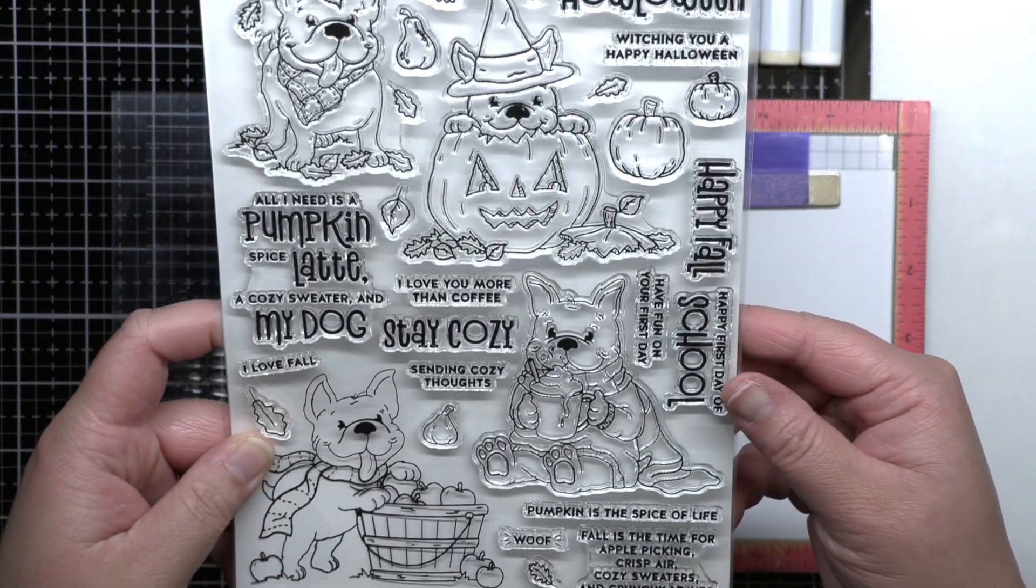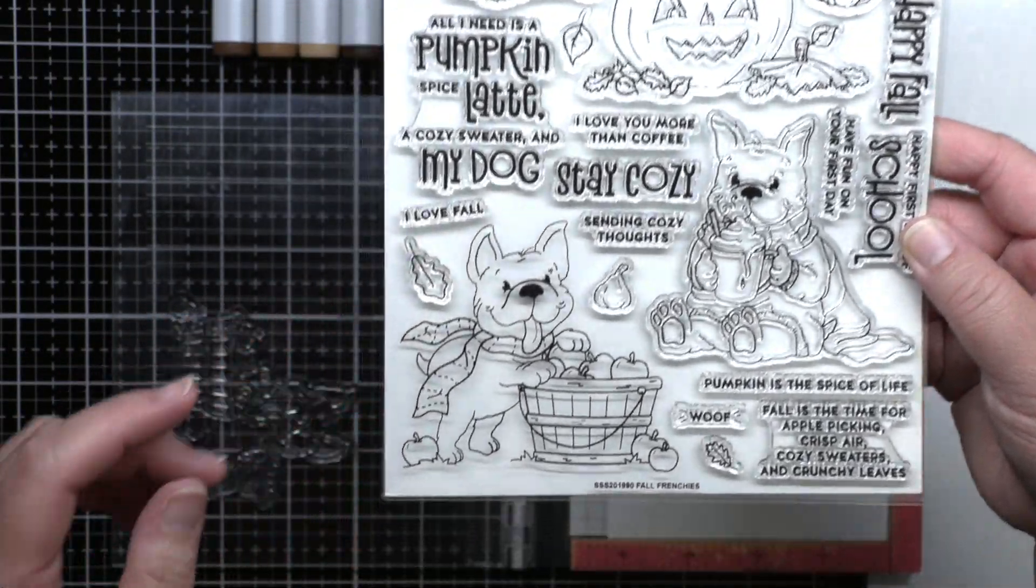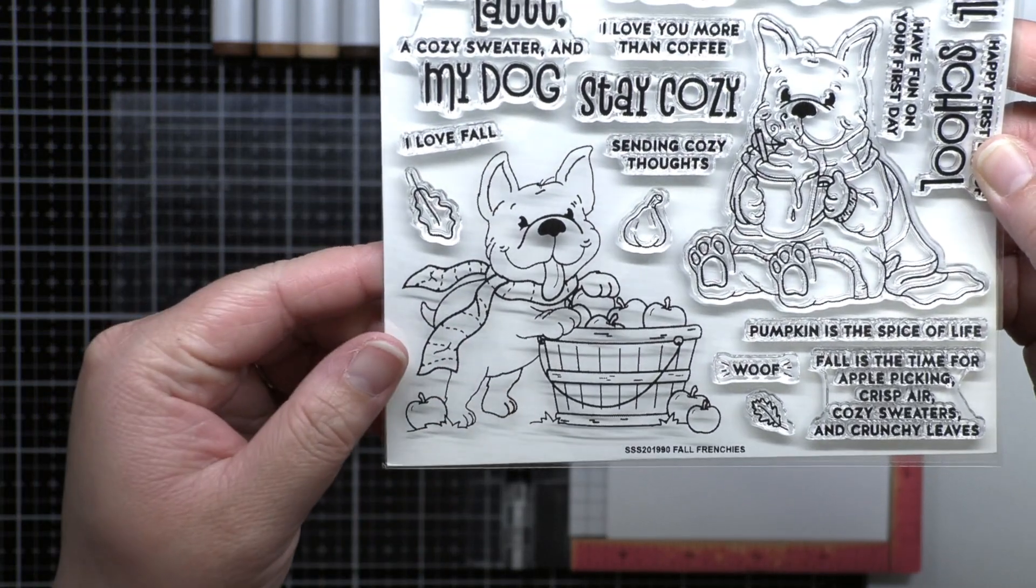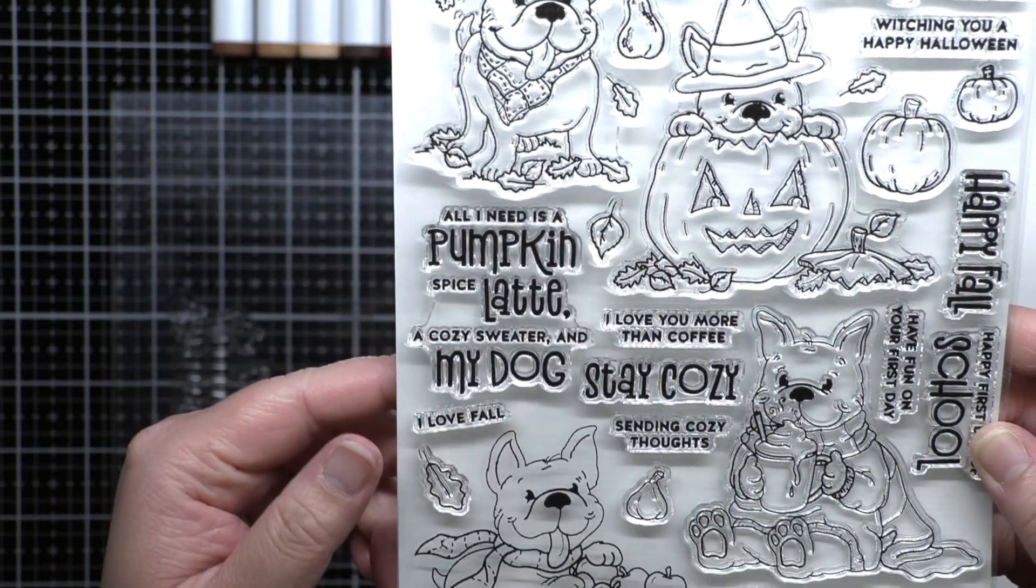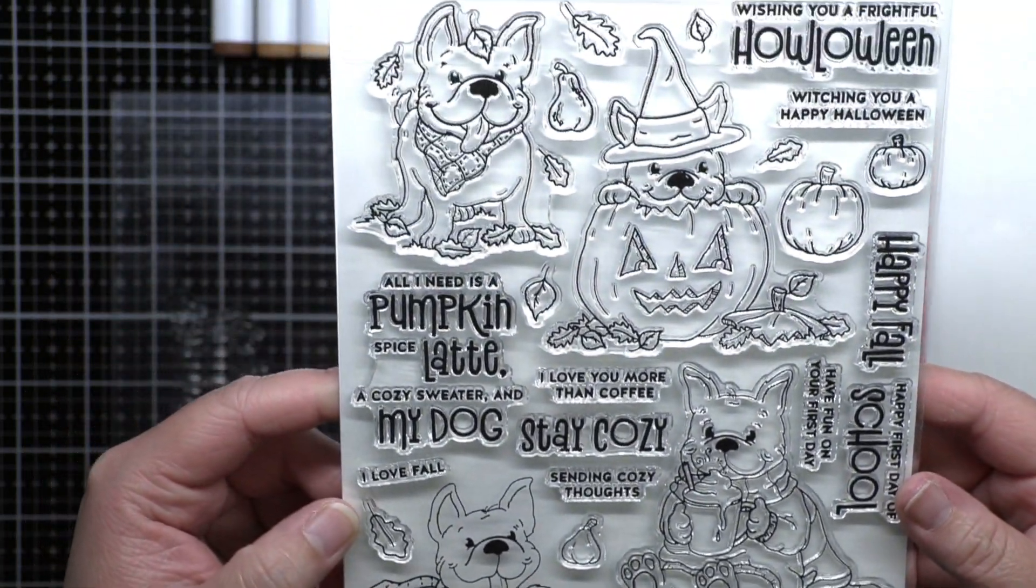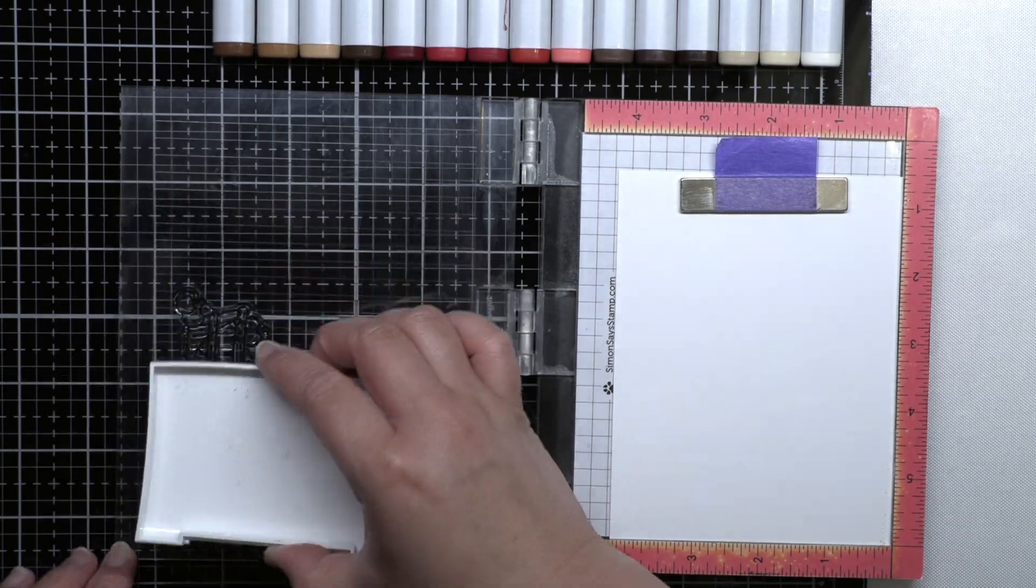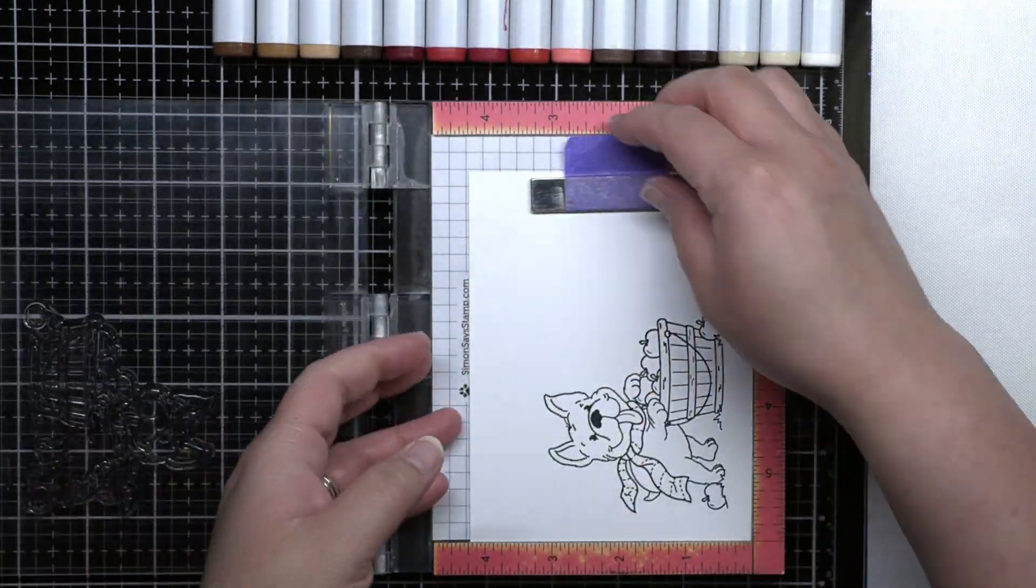Fall Frenchies is full of cute autumn-themed French bulldogs and great fall sentiments. I'm using the adorable apple-picking pup for today's card. I stamped the image onto white cardstock with Versafine, heat-embossed him with clear embossing powder, and colored him with Copics before die-cutting him with the coordinating die.